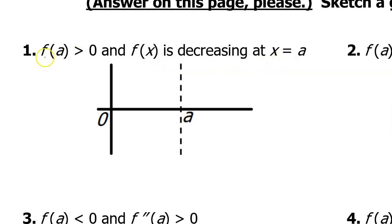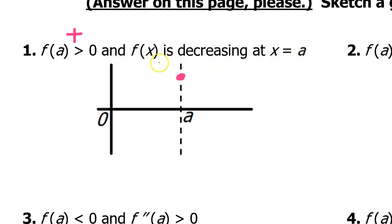Problem one says the value of the function at A is greater than zero — in other words, the value of the function at A is positive. So here's A. If the value of the function at A is positive, that means it will be above the x-axis. In addition to that, f of x is decreasing at x equals A, which means that the function should be going downhill. So that's one way I could have drawn it.